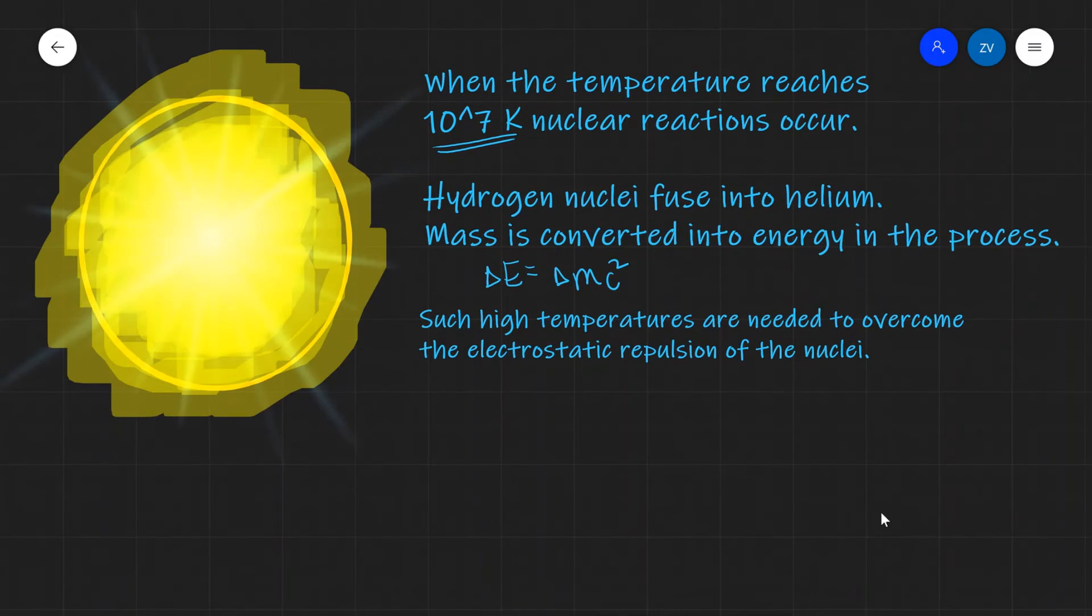As soon as that happens, a star will be happily fusing hydrogen nuclei into helium for probably a very long time depending on the mass, and the star has entered what is known as the main sequence.